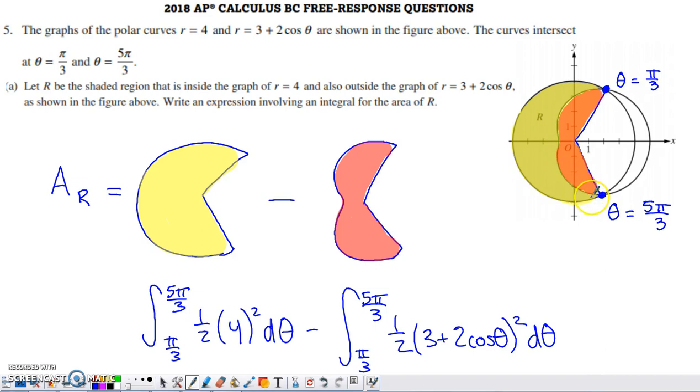My limits of integration on each integral will be π/3 to 5π/3, regardless of whether we're traveling around the circle or the limaçon. Inside each integral, we need the formula for the area of a sector. The area of a sector is 1/2 r² times the change in angle. When building the integral, the change in angle is dθ. So I have 1/2 r² dθ for the area of the sector of the circle. Applying the same idea to the limaçon, that will be the expression to find the area of R.